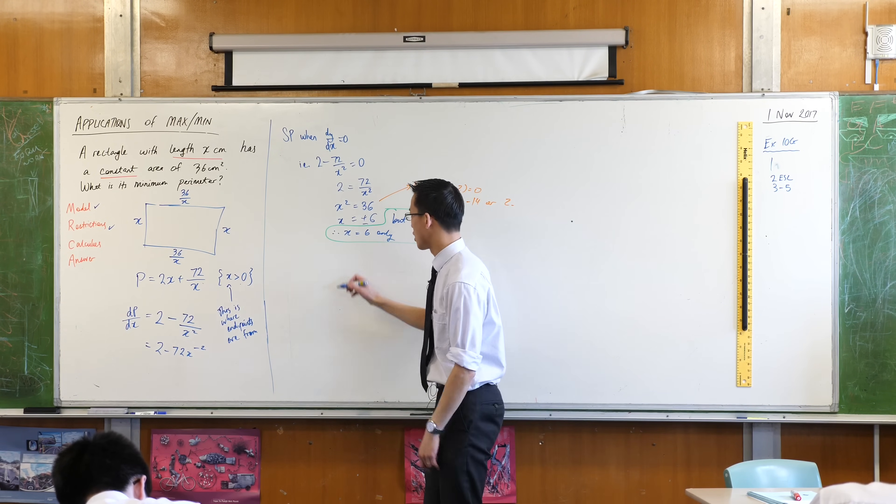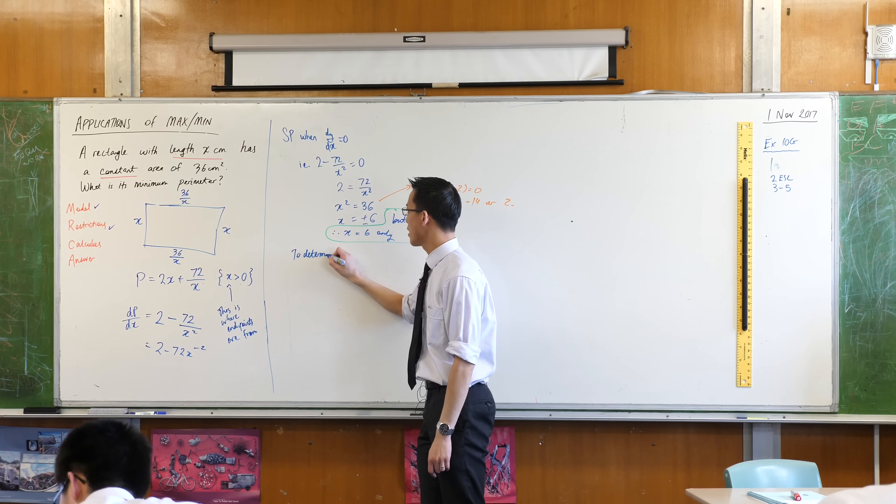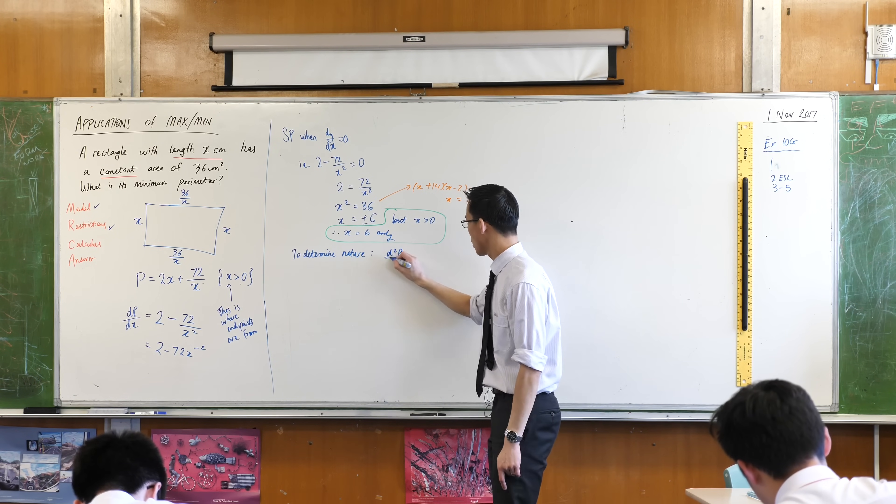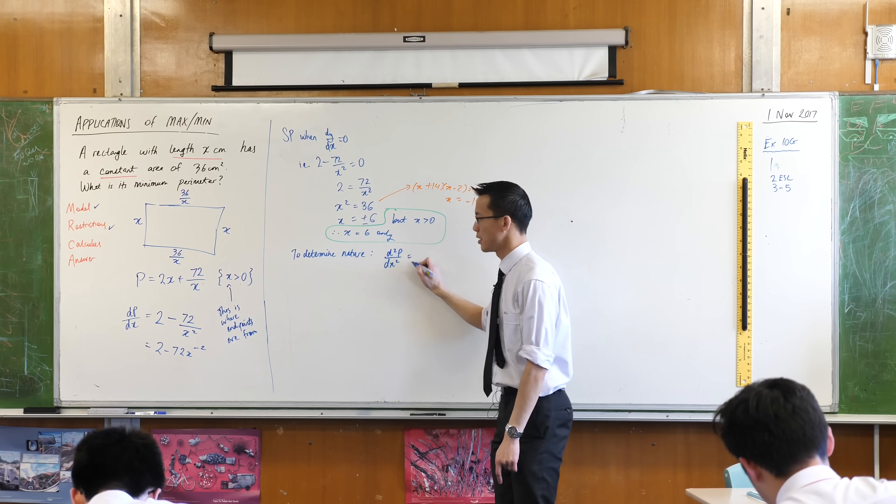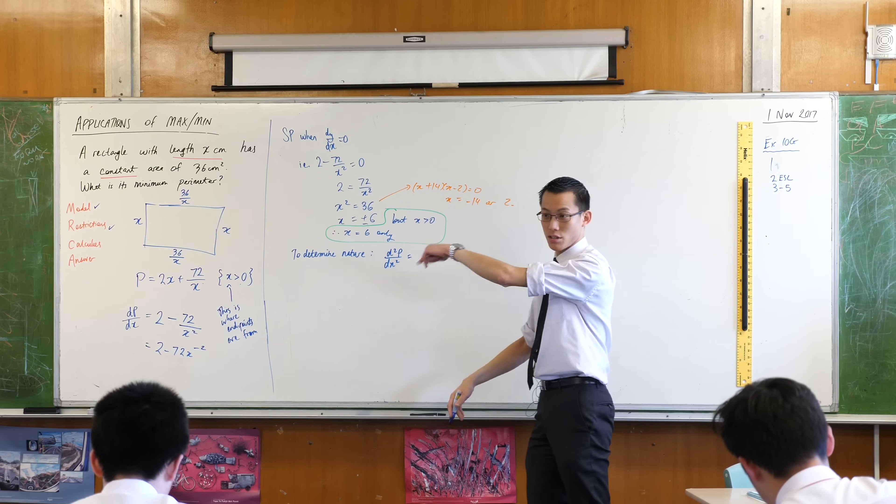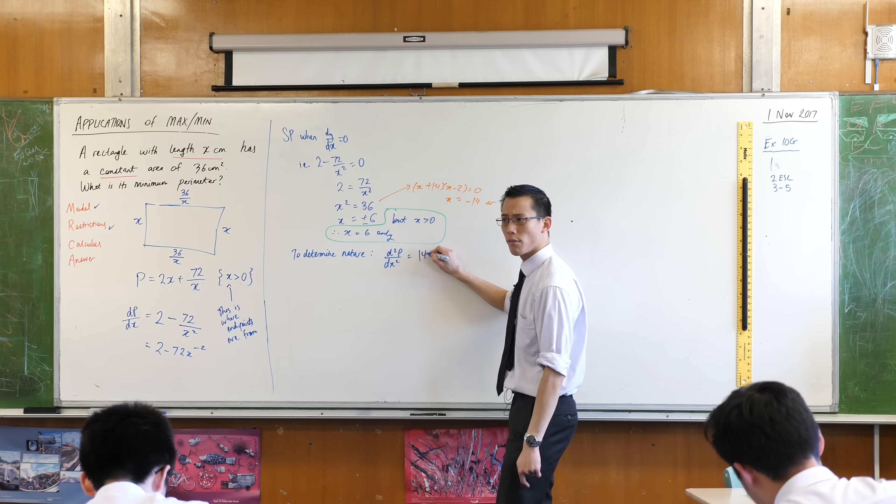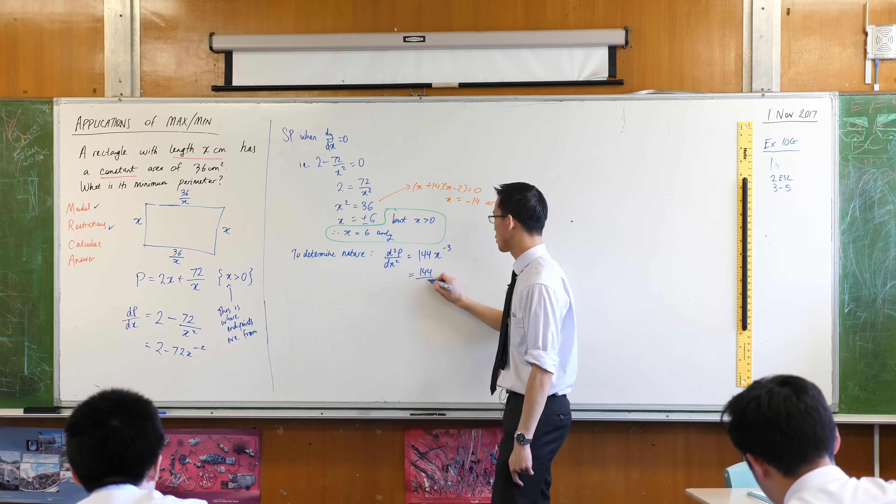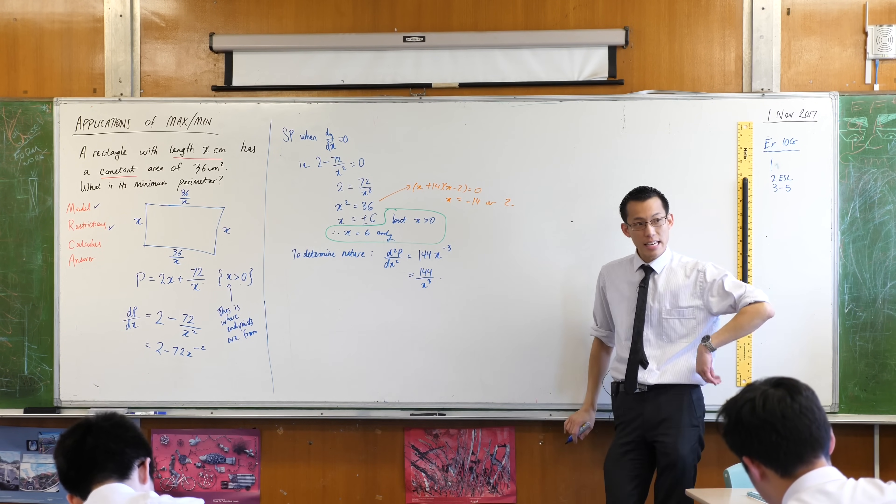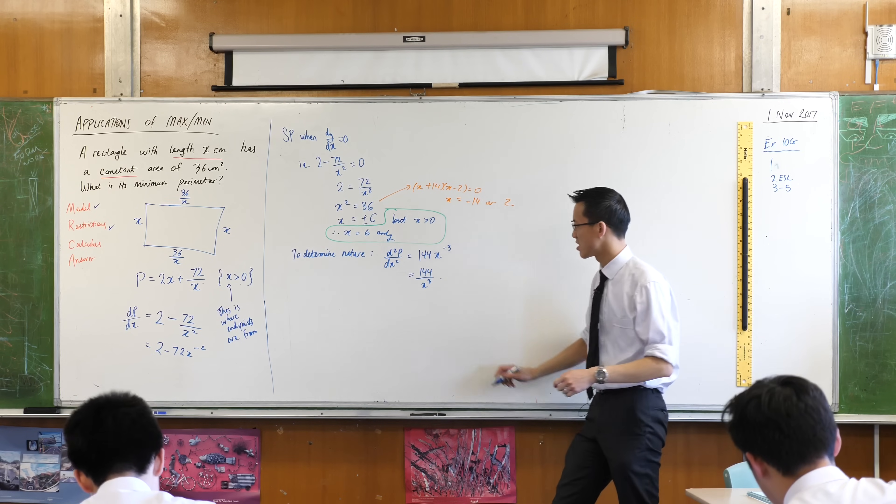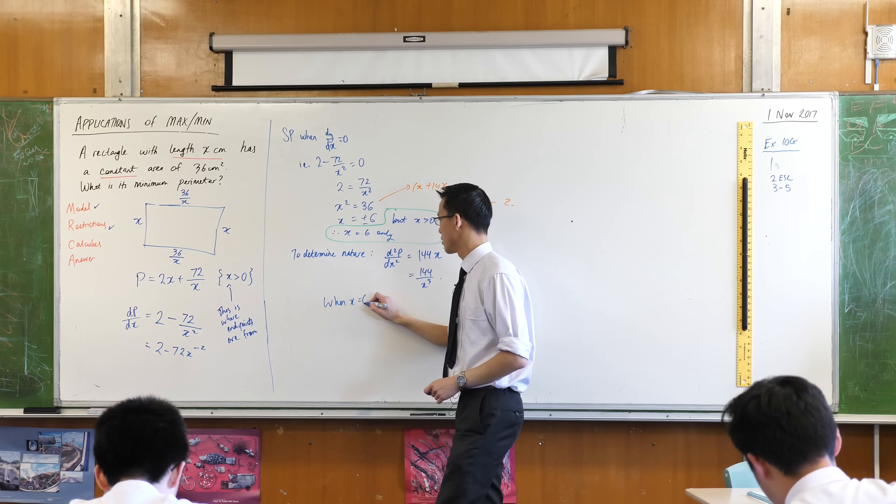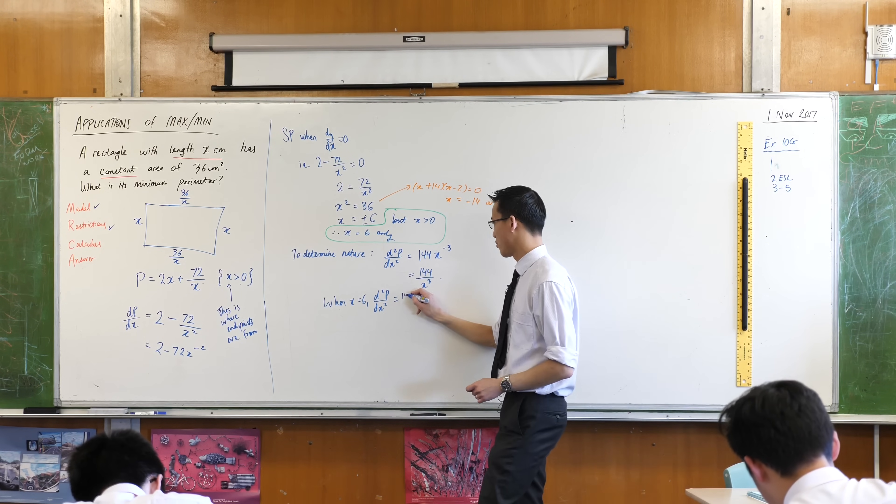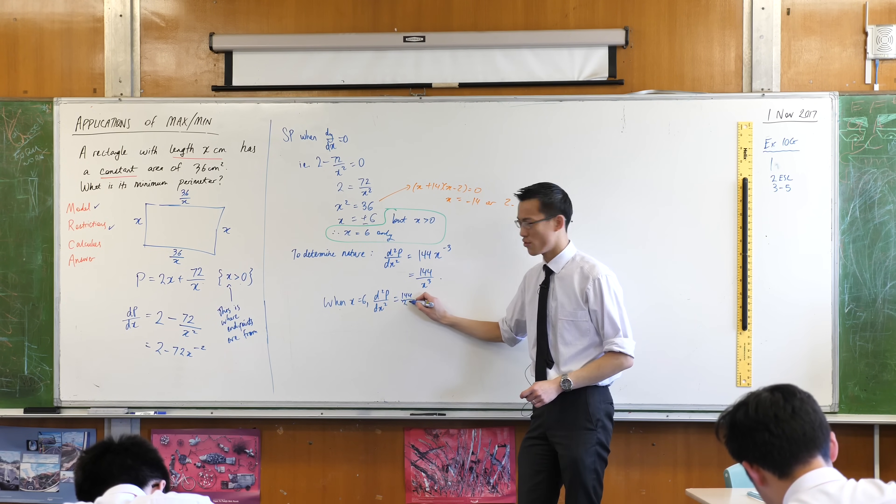So to determine the nature, I'm going to go ahead and differentiate again. So this is d squared p on dx squared. The 2 contributes nothing. I'm going to start doing that thing with the power. So that's going to be 144 x to the negative 3. So it's 144 on x cubed.